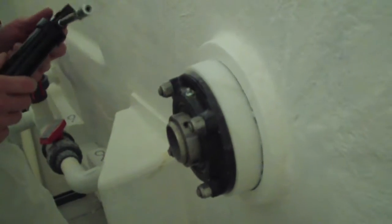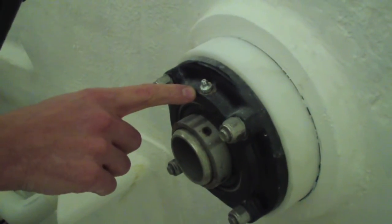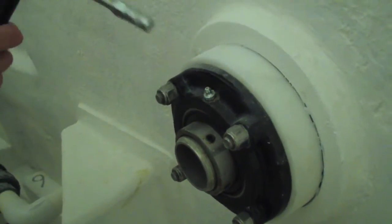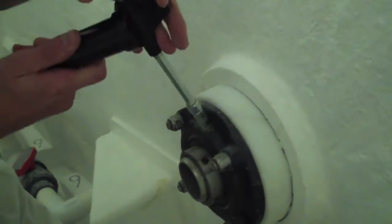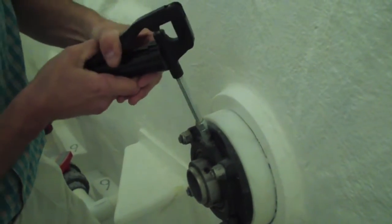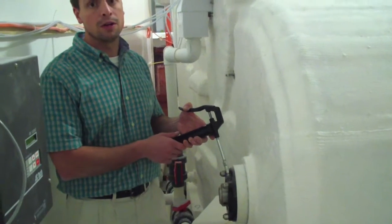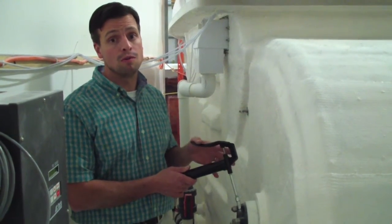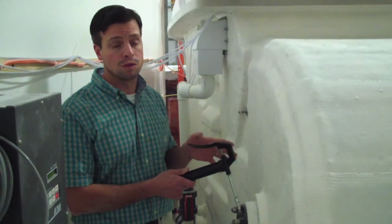So it's a standard Zerk fitting just like you'd see on a lawn mower. Here's your Zerk fitting on the paddle wheel bearing. We'll take our grease gun, make sure we get a good connection. One, two. And there you go, two squirts of grease and you're all set. There's no need to over grease. You only want to do two squirts once a year.